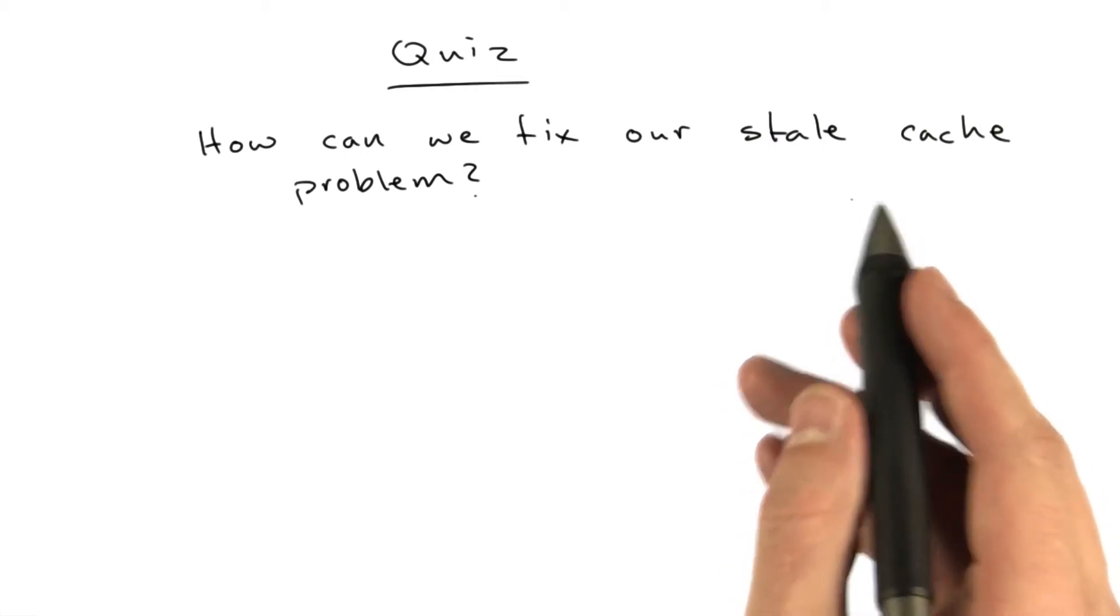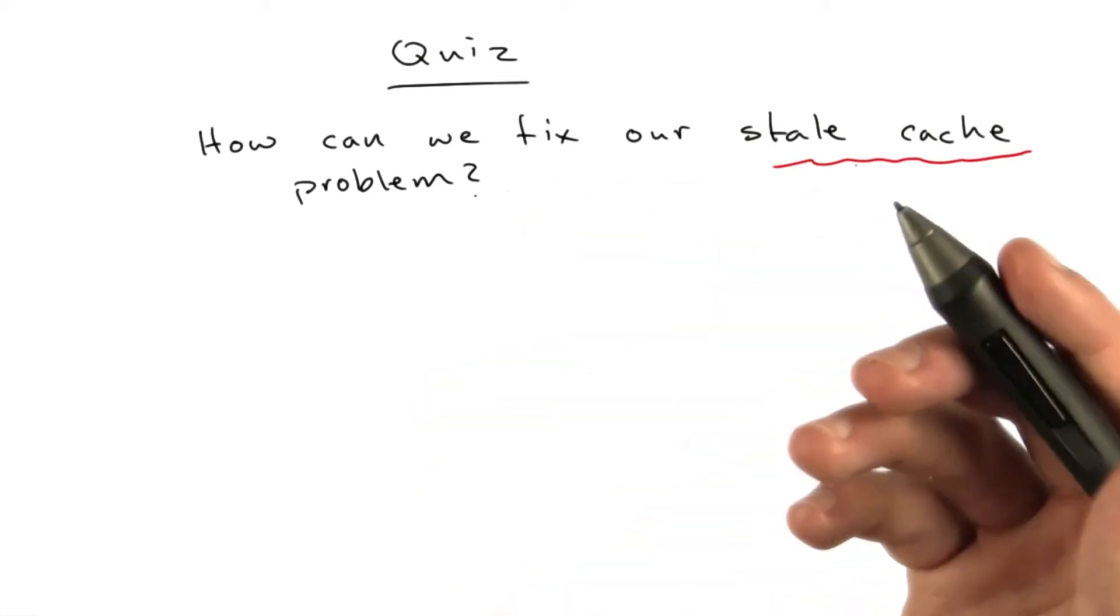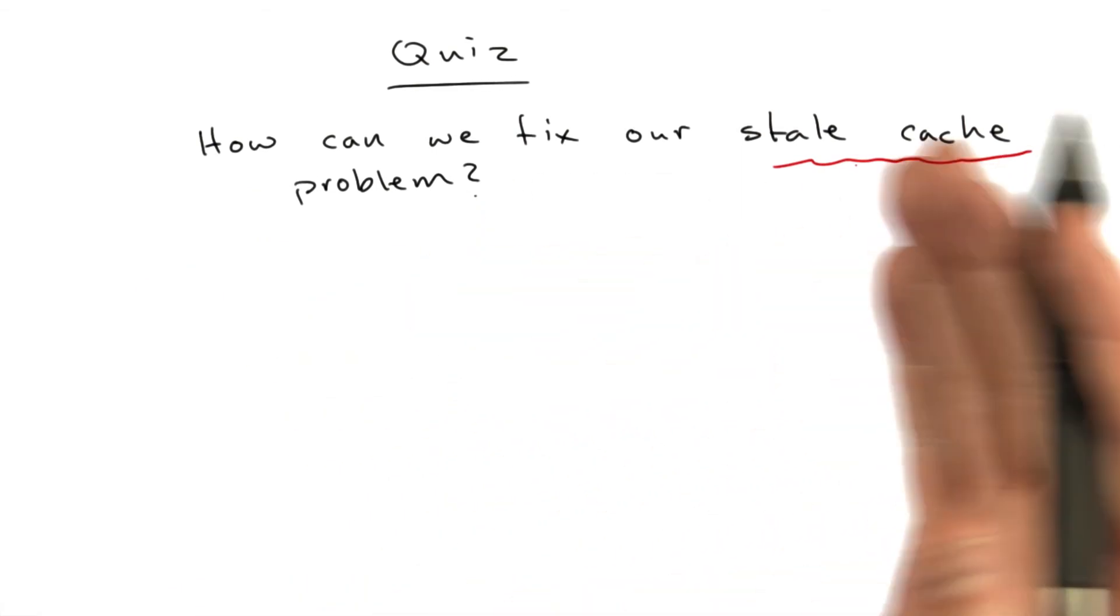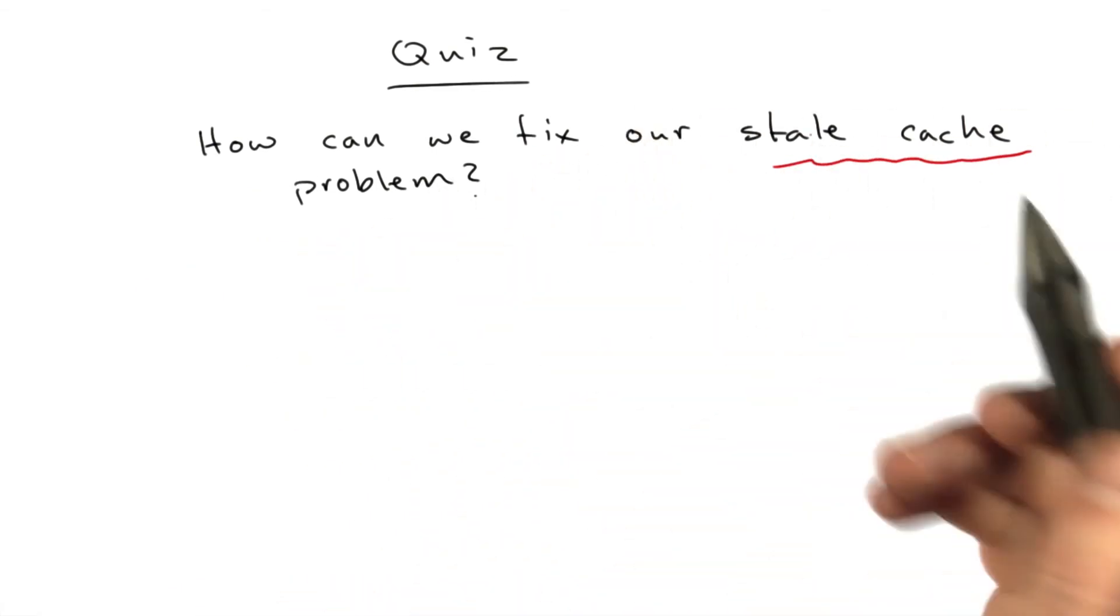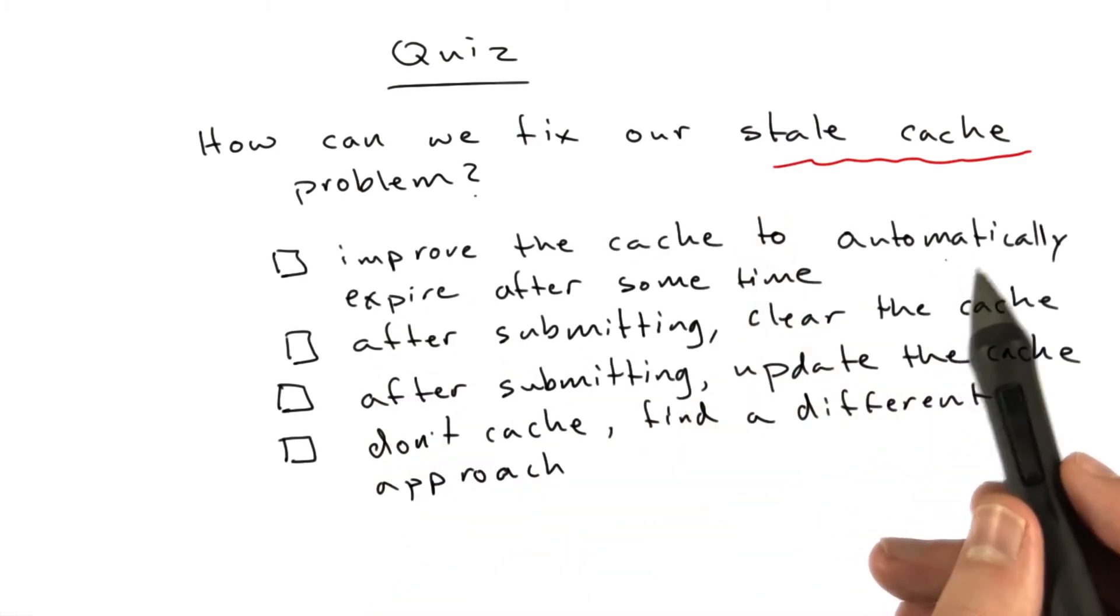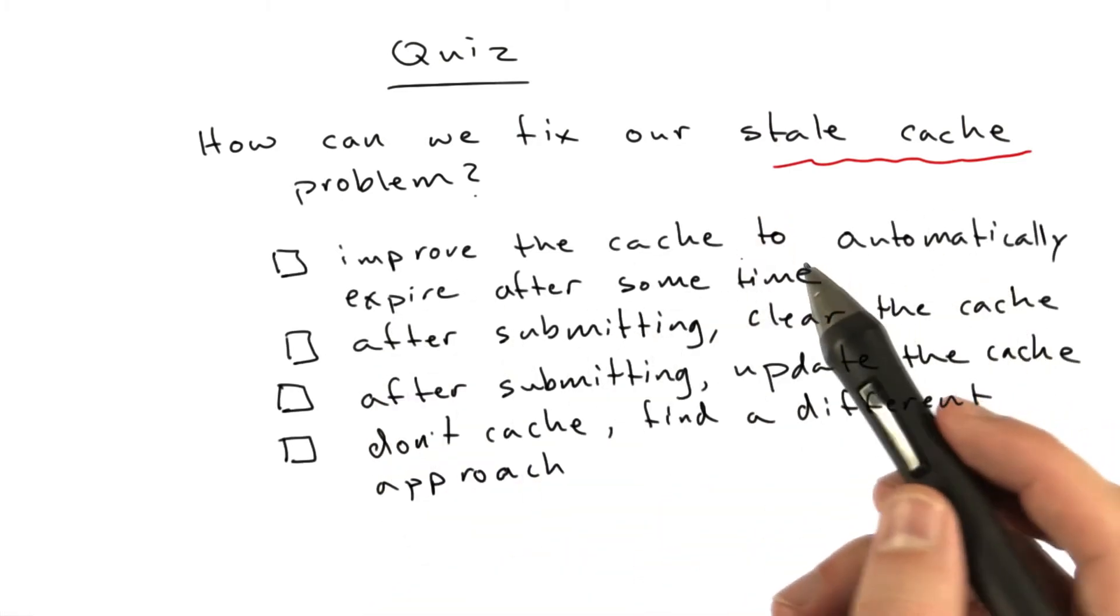How can we fix our stale cache problem? And stale cache, of course, refers to the fact that our cache is stale. We submitted new content to our database, and our cache is now out of date. That's referred to as having a stale cache.